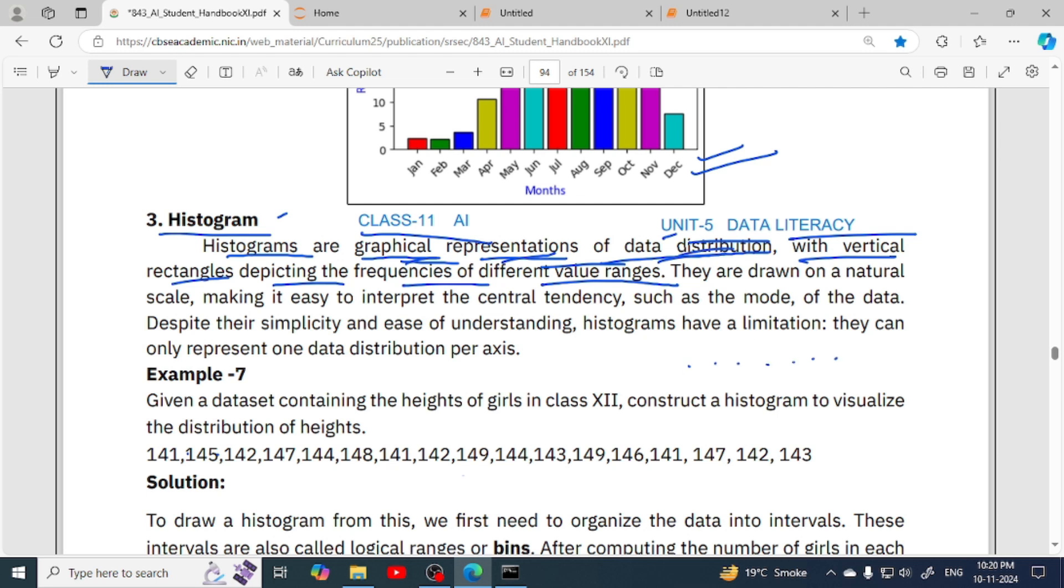Here, histogram is a pictorial or graphical representation of data distribution. Data distribution means how data is spread in a range of values. For example, here range of values are like 141 to 149, so how data is distributed can be represented graphically with vertical rectangles. Don't get confused - we drew rectangular bars in bar chart, in the same way histogram also has rectangular bars, but the concept of both charts are different.